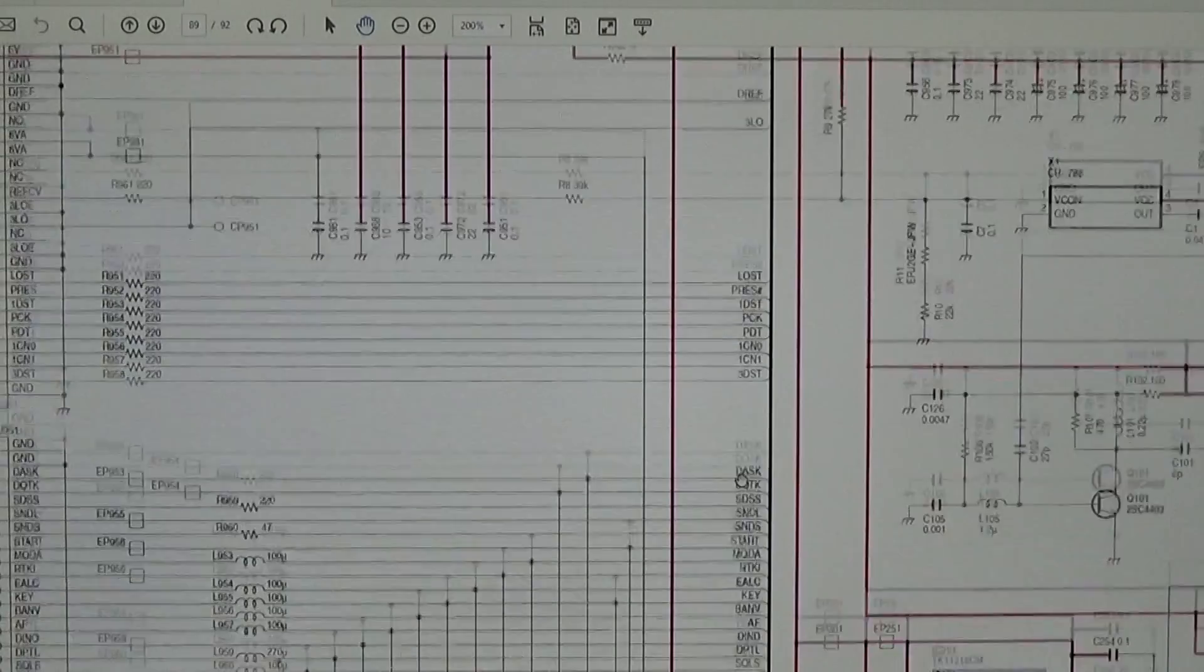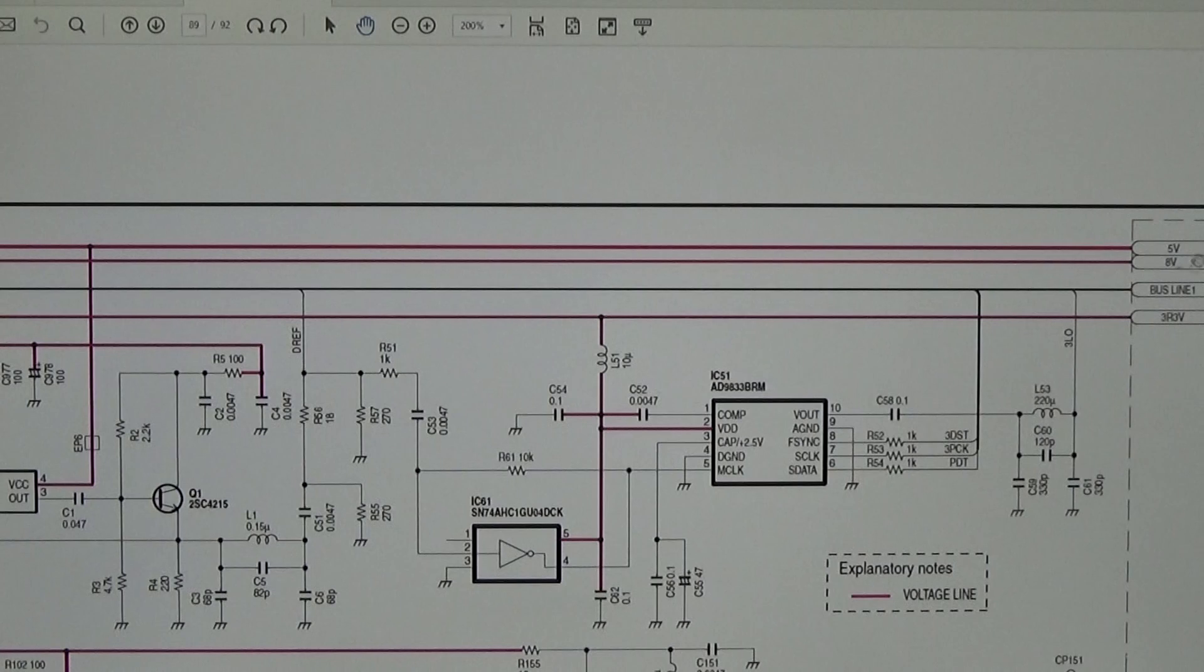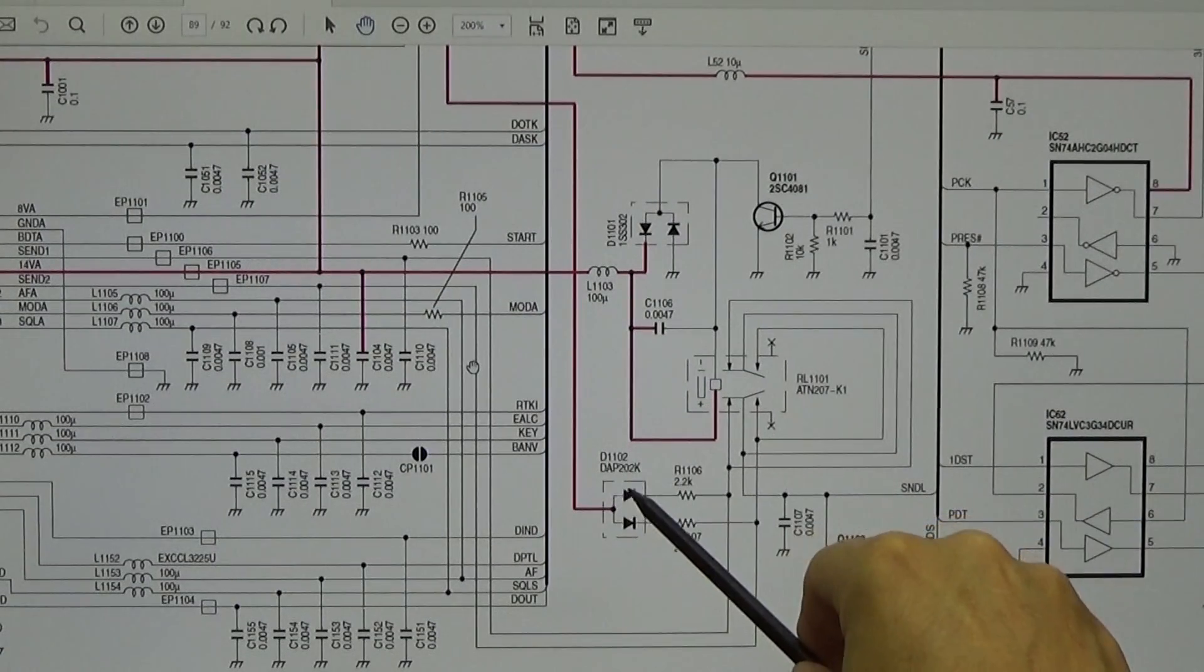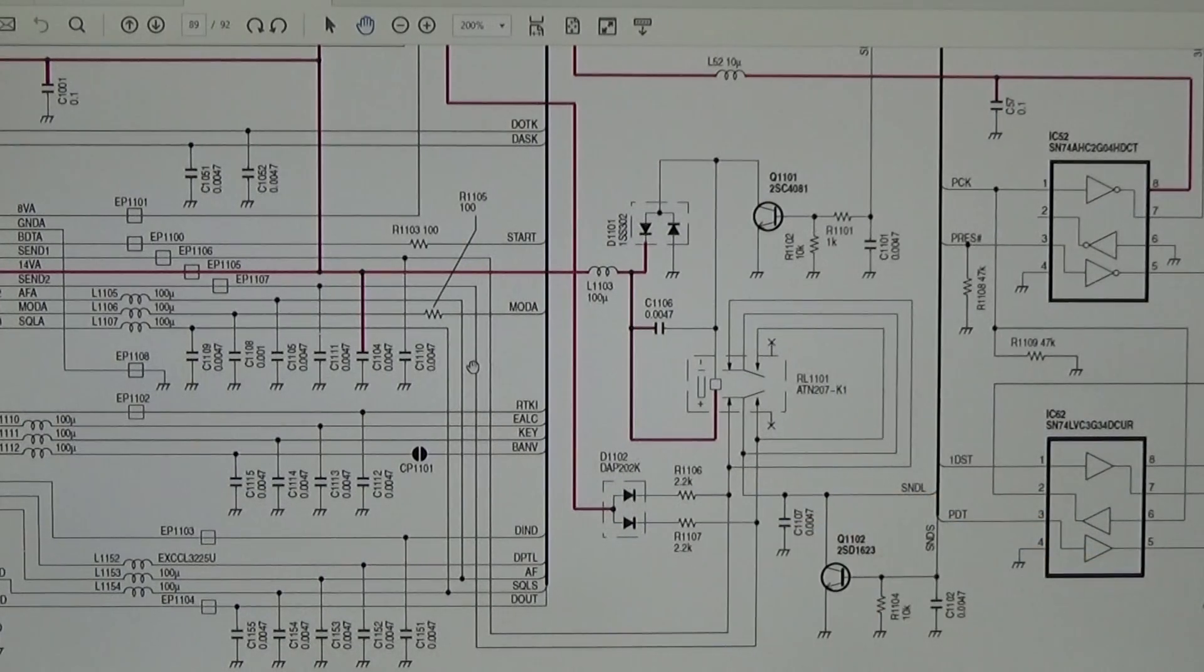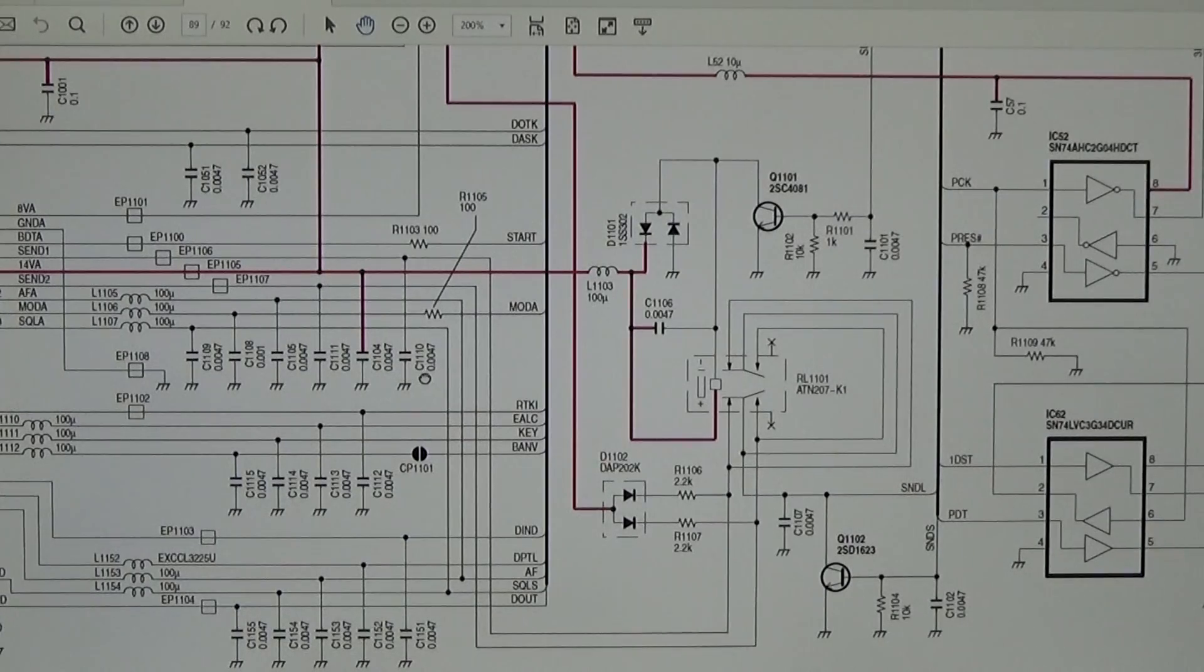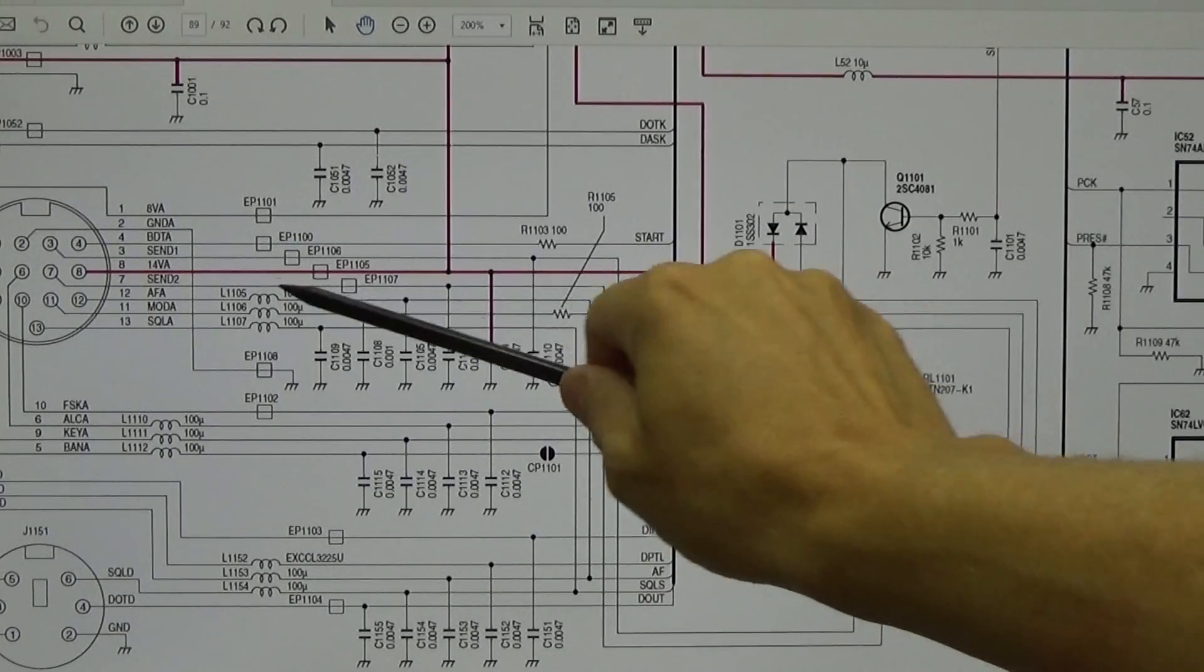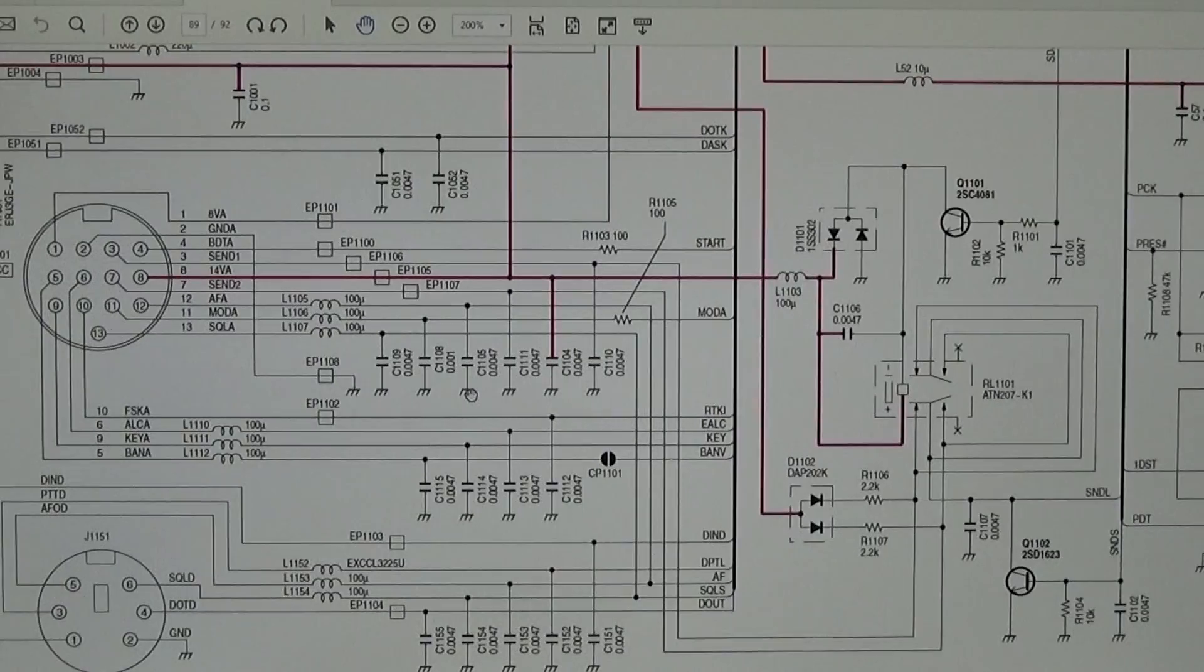We see here these both diodes and when we follow up this supply line, let me go up here and bring it over, you see here we have our 8 volt supply line which finally comes down here to these both diodes. Of course we have a voltage drop of 0.7 volts here at the diode.